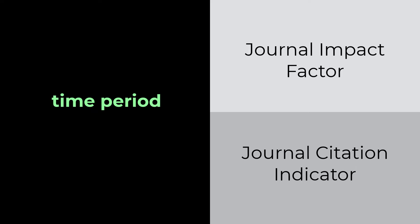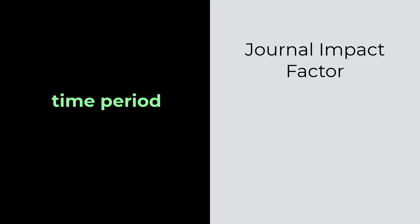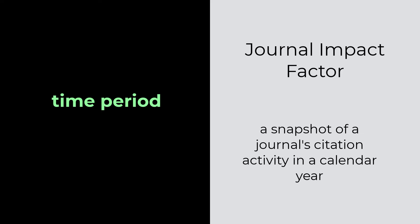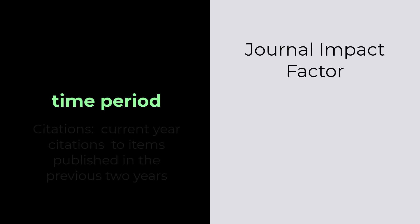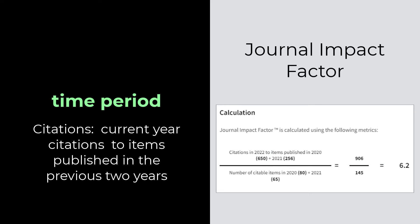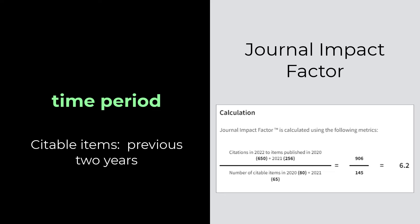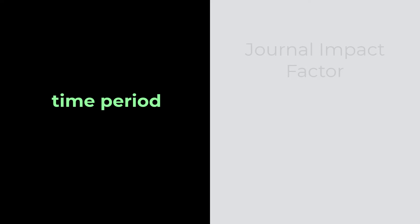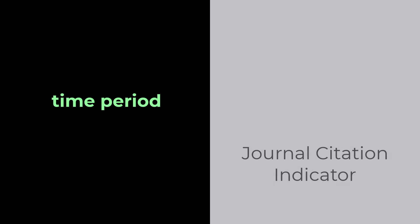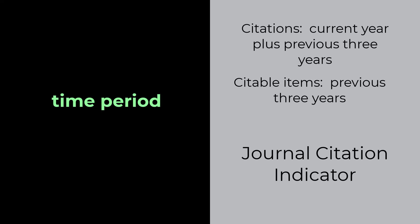These metrics also differ in the time period they examine. The JIF is a snapshot of a journal's citation activity in a calendar year. The numerator examines how many citations the journal received in the current JCR calendar year to its published items from the previous two years, while the denominator includes citable items from the previous two years. The JCI includes citations from the current year and the past three years, to citable items from the prior three years.